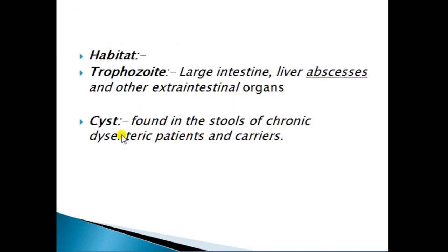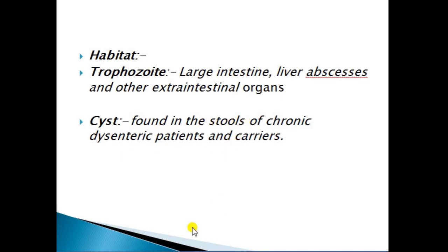Now we will discuss the habitat of Entamoeba histolytica. Trophozoites are mainly found in the large intestine, liver abscesses, and other extra-intestinal organs. Whereas cysts are mainly found in the stool of chronic patients and carriers.